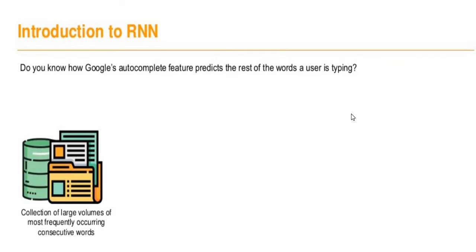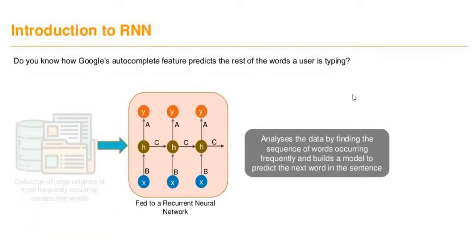Do you know how Google's autocomplete feature predicts the rest of the words the user is trying to type on the Google search engine? The working mechanism behind this is that there is a huge collection of large volumes of the most frequently occurring consecutive words, and on the basis of those historical datasets, the Google search engine tries to predict what the next words will be.